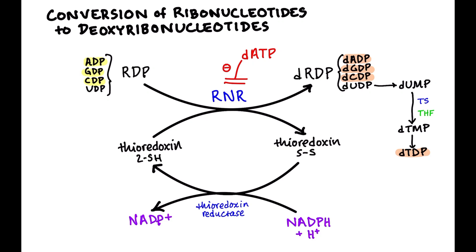Ribonucleotide reductase is inhibited by deoxyATP (dATP). Remember from purine synthesis and degradation: ADA deficiency reduces conversion of adenosine to inosine, so adenosine builds up and gets converted to dATP. That dATP buildup inhibits ribonucleotide reductase, so you can't do DNA synthesis properly. This leads to a decrease in white blood cell count, which is ultimately what causes severe combined immunodeficiency (SCID) in ADA deficiency.